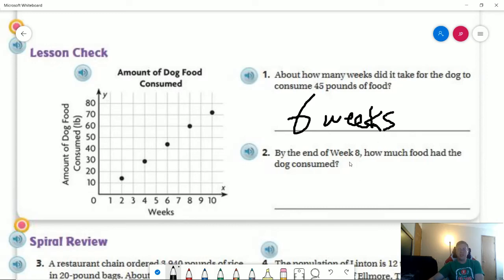And number two, by the end of week eight, how much food did the dog consume? That would be 60 pounds. And you can use LBS period for the abbreviation for that if you don't want to write the word out. So those were our questions for the homework.